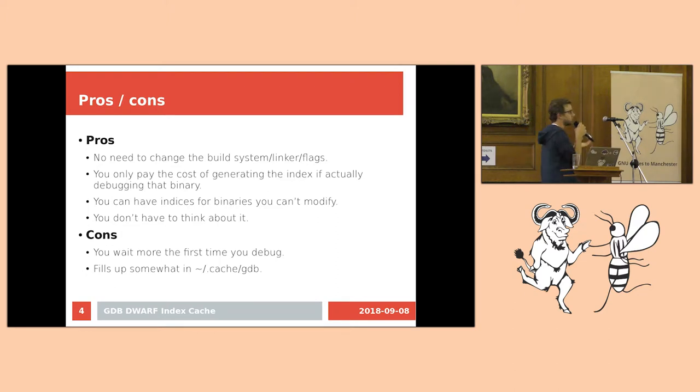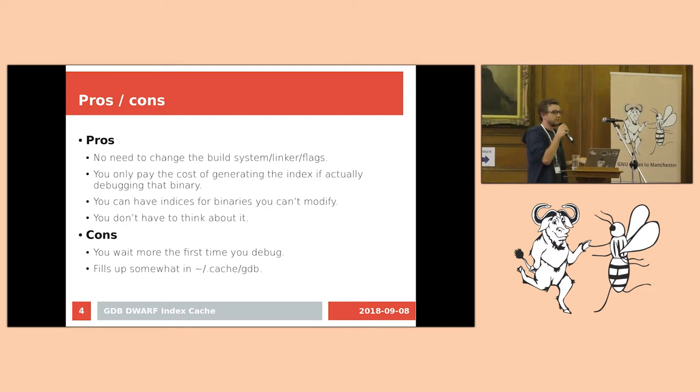Also, you only pay the cost of generating the index if you actually debug. So with the two other methods, if you build, and you use, for example, GDB add index at the end, it will take maybe 10, 20, 30 seconds to generate an index, but you might not even debug that file. So you've just waited 30 seconds to generate an index that you'll never use. So with this method, it's the first time you debug with GDB that you pay that price, and after you get the benefits.